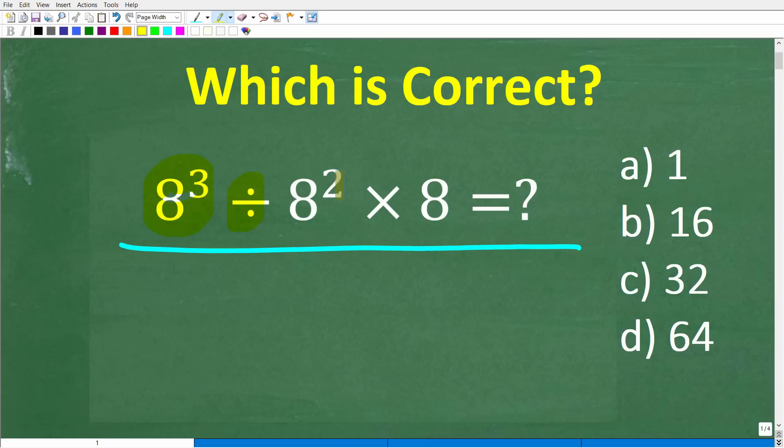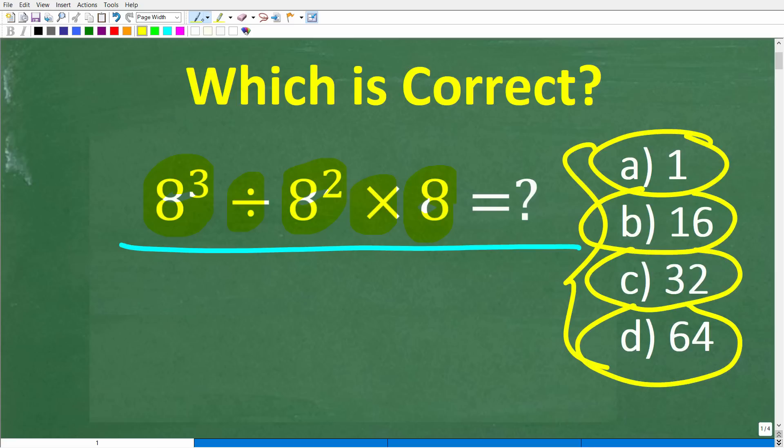We have 8 cubed divided by 8 squared times 8. Now, we do have a multiple choice question here, and let's take a look at our answers. So A is 1, B is 16, C is 32, and D is 64.